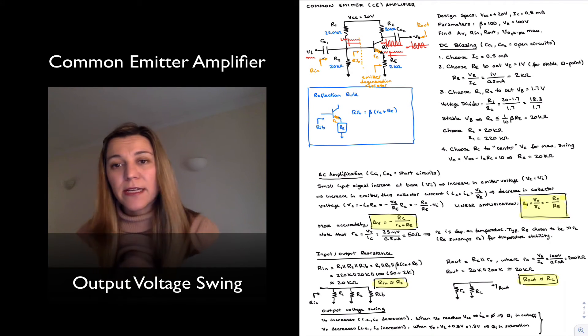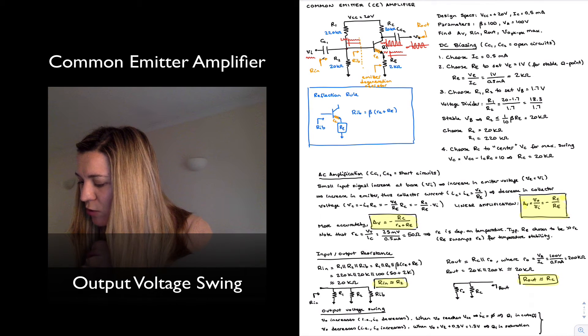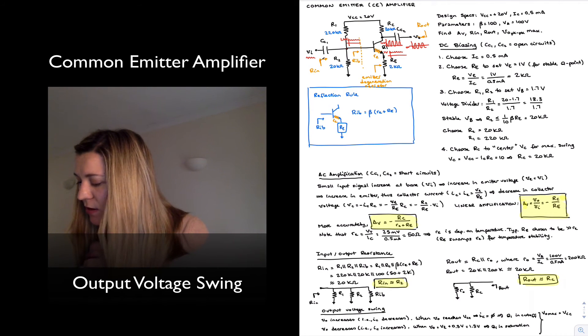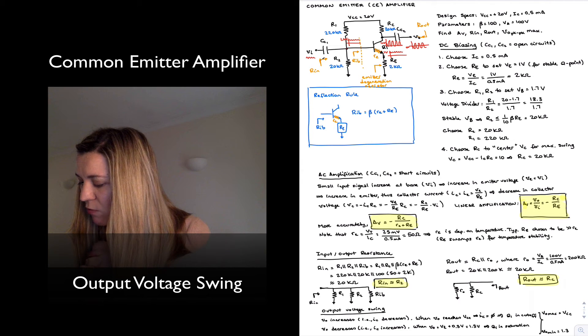These limits between cutoff and saturation dictate how far our voltage swing can go. Our maximum output voltage is going to be VCC before the transistor cuts off, and our minimum Vout is going to be around 1.3 volts.